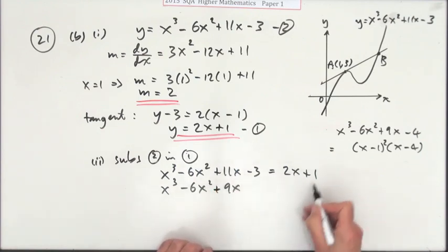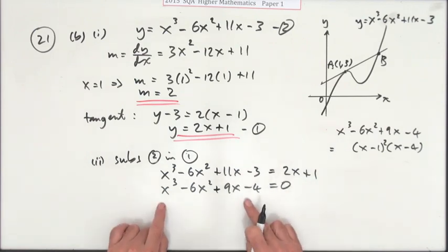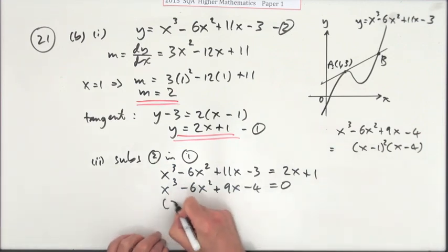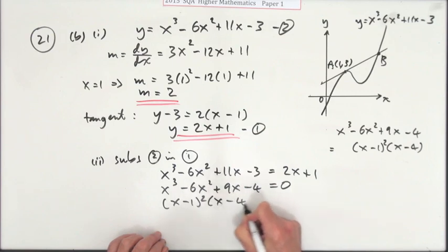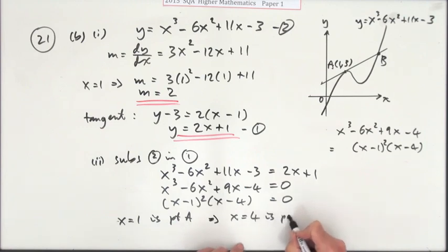Bring that over - nothing affects these two terms, so that becomes +11x, and when you subtract 2x that makes that 9x. That makes that -4 = 0. And lo and behold, that's what you had in part (a) to solve. That I would have to factorize - I've done that already. That's (x-1)²(x-4). The interpretation of the results are: there's a double root, x = 1, which is point A because it's a double root, which means x = 4 is point B.